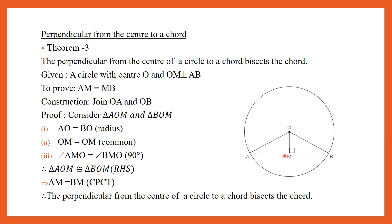Now consider the two triangles AOM and BOM. We can see AO is equal to BO, radius of the circle. OM is equal to OM, the common side, and angle AMO is equal to angle BMO, which is 90 degrees. Therefore, triangle AOM is congruent to triangle BOM using RHS congruence. From this we can write AM is equal to BM using CPCT. Therefore, the perpendicular from the center of a circle to a chord bisects the chord.